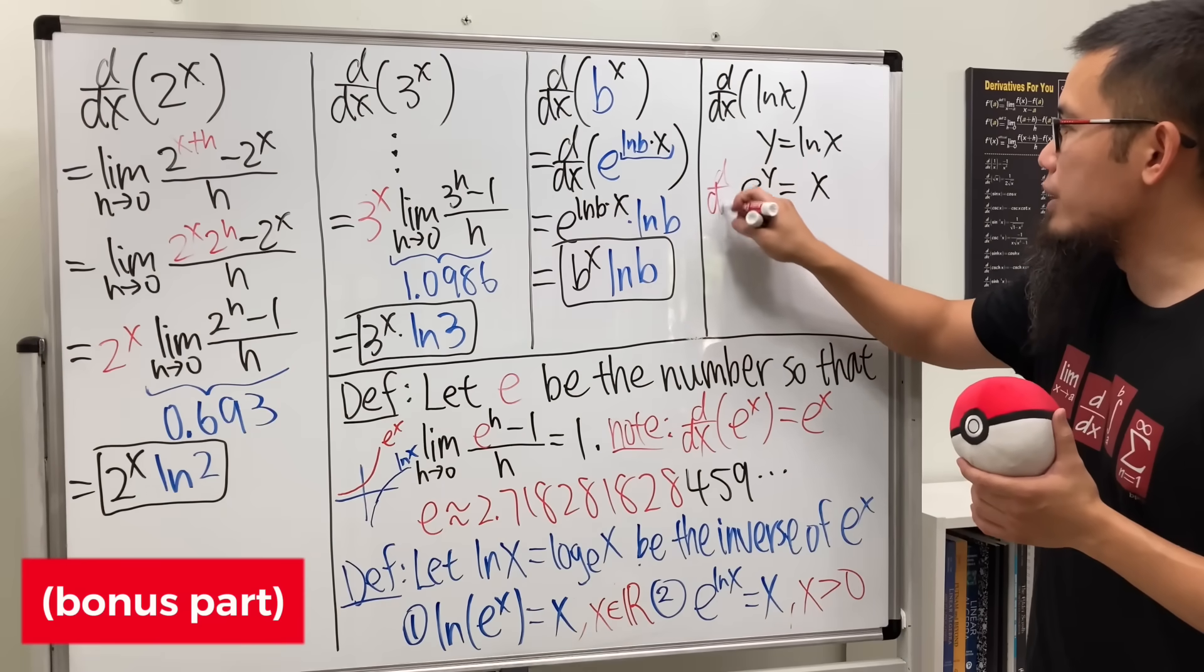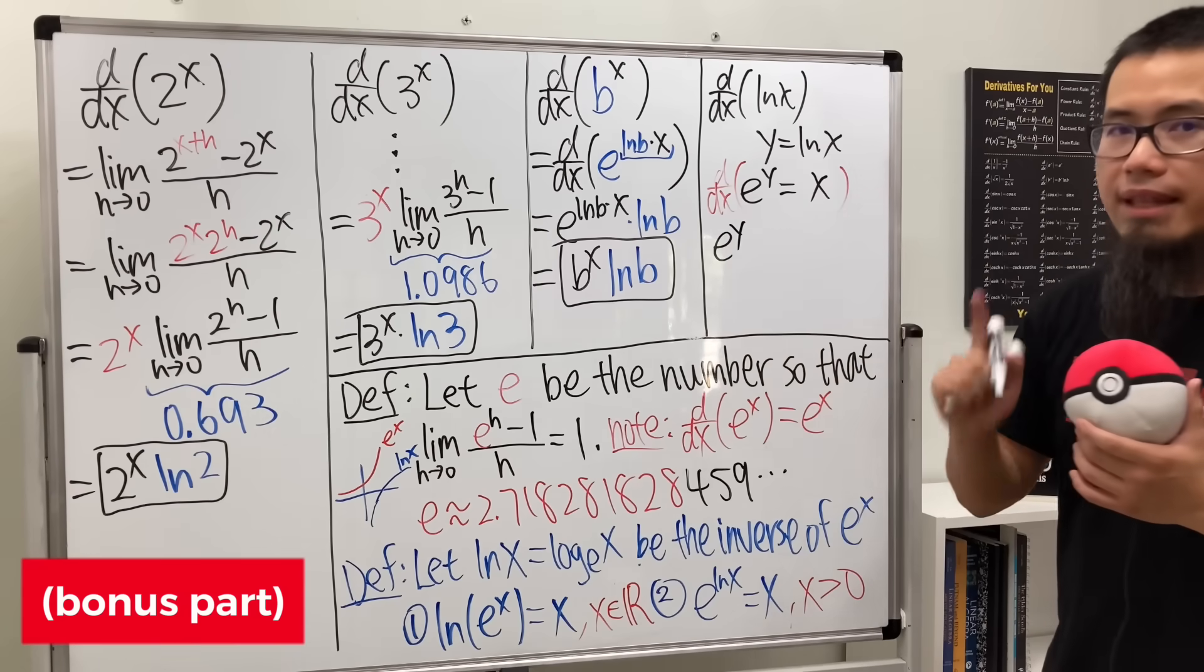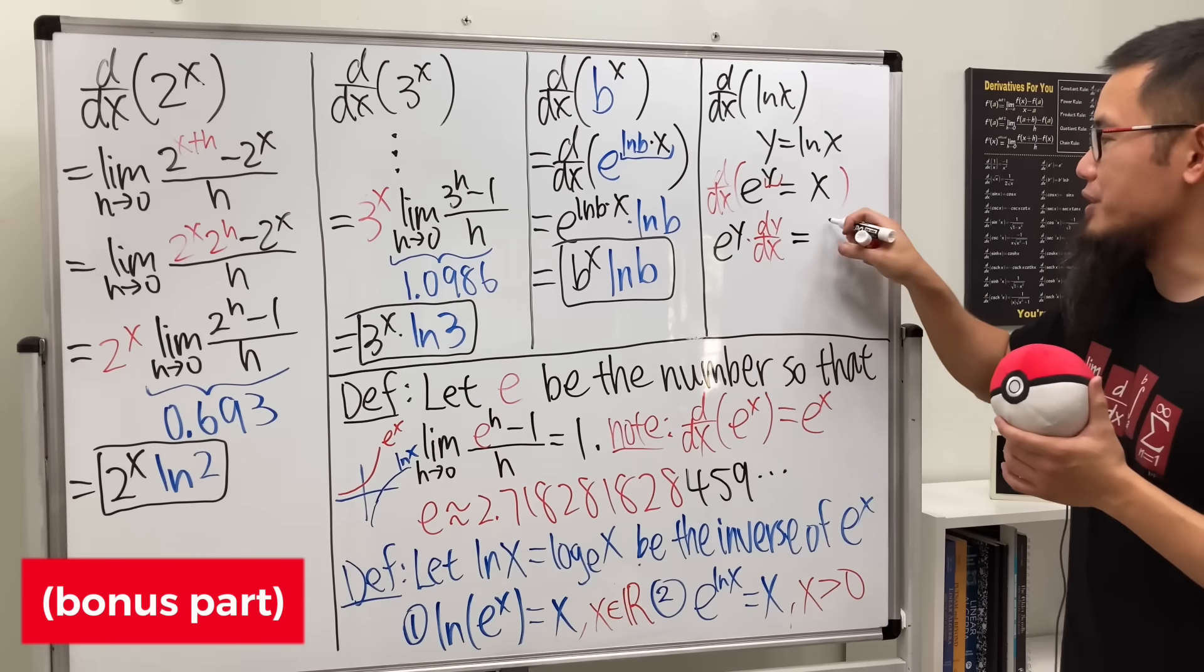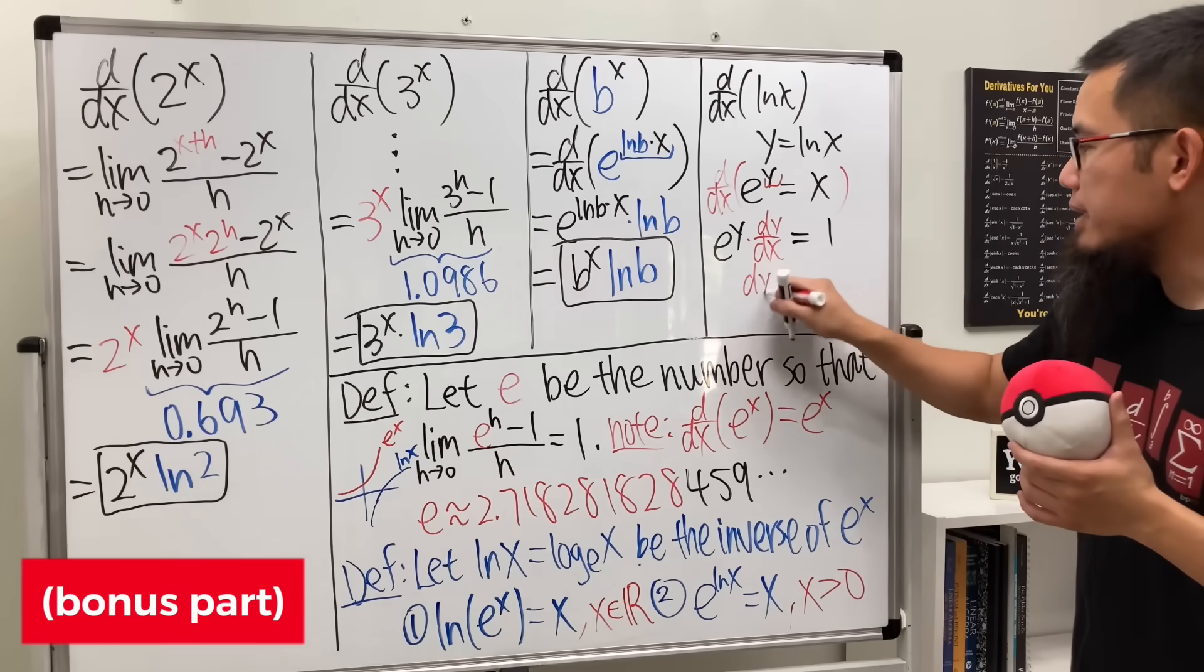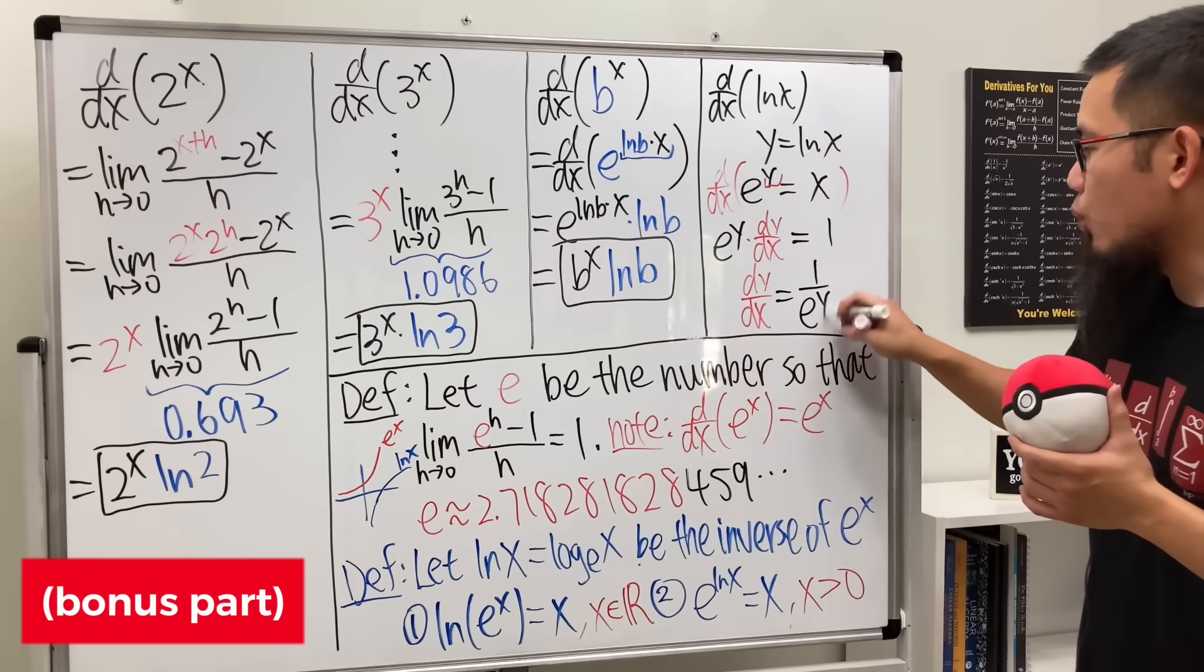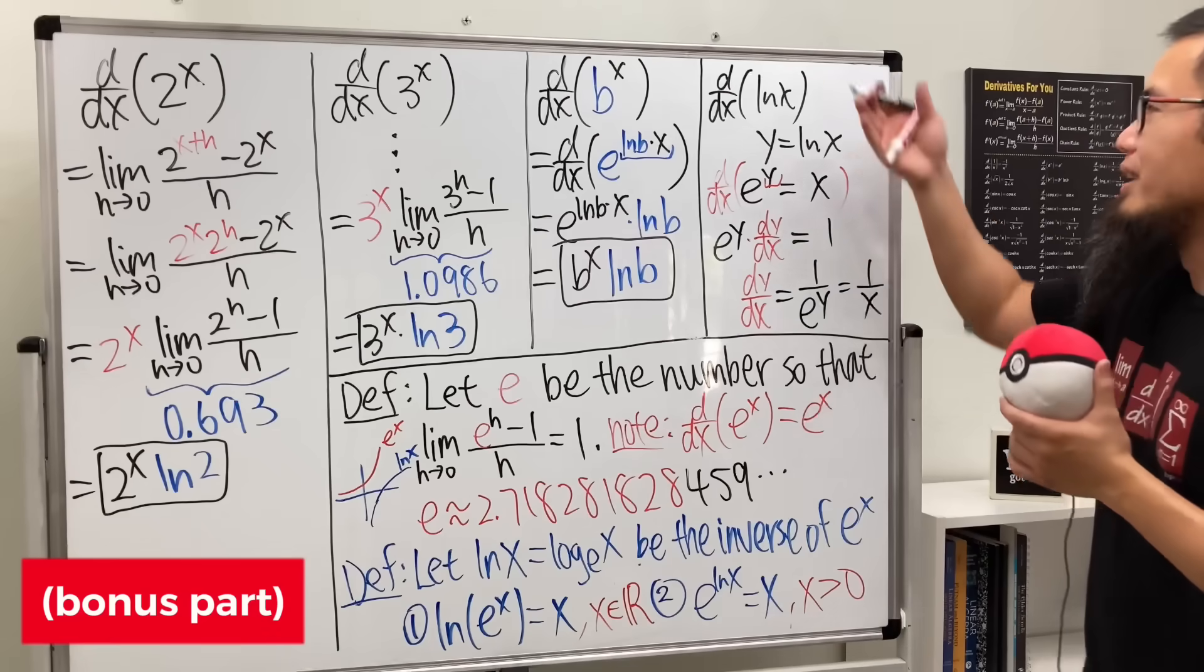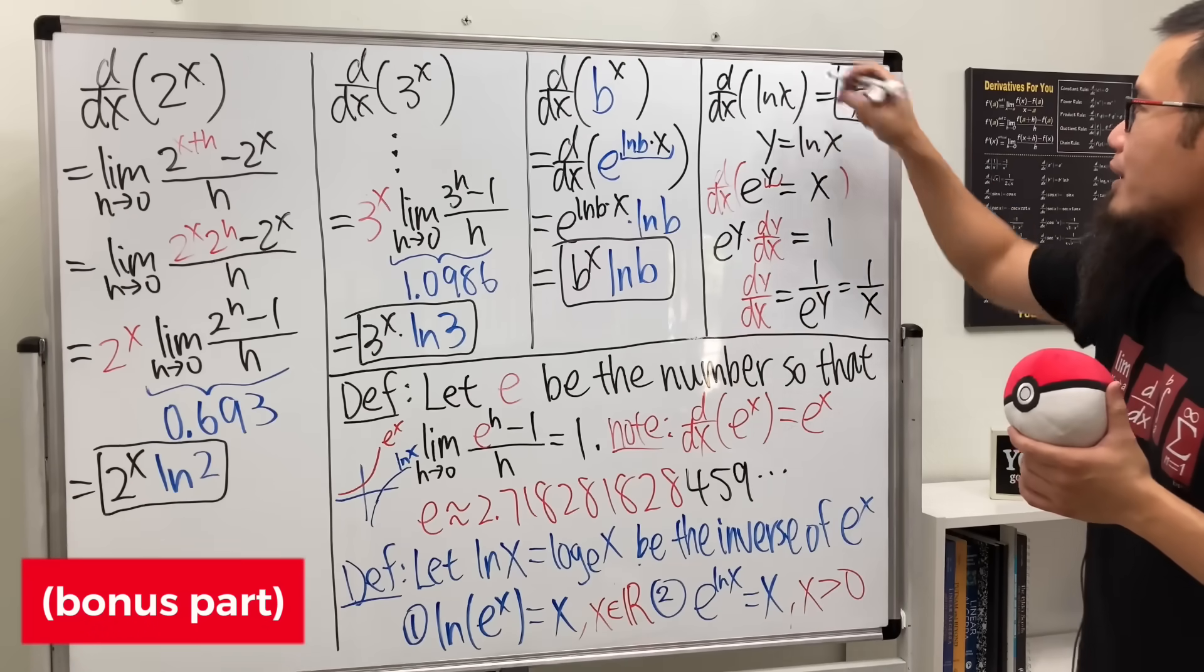Differentiating e to the y, we get e to the y, and then multiply by the derivative of y, which is going to be dy/dx. And then on the right-hand side, we just get 1. Then we can divide this on both sides. So, ladies and gentlemen, dy/dx is just going to be 1 over e to the y. But what's e to the y? Well, e to the y is just x. So this is just 1 over x. So, the derivative of ln x is just 1 over x. And we are done.